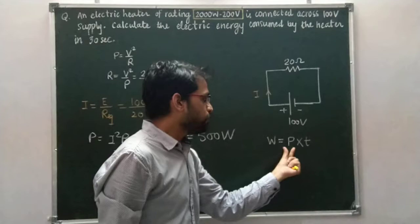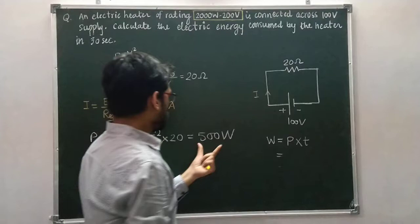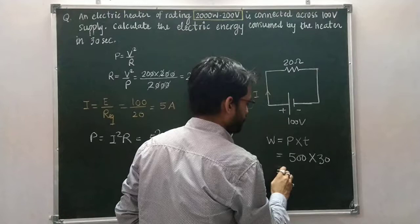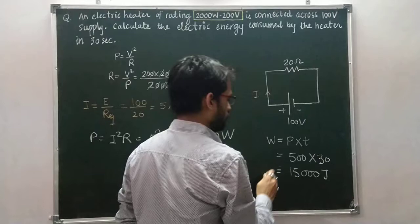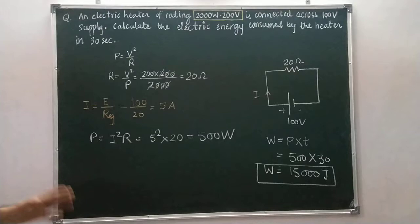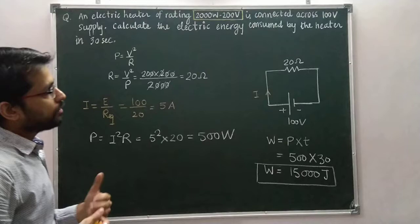Now we have the power, and the time is 30 seconds. So we have to calculate the energy consumption for 30 seconds. Put the value: power consumed by the electric heater is 500 Watt, multiplied by time of 30 seconds, that would be 15,000 Joules — the energy consumed. So this is the answer: 15,000 Joules of energy is consumed by the electric heater in 30 seconds when connected across a 100 V supply.